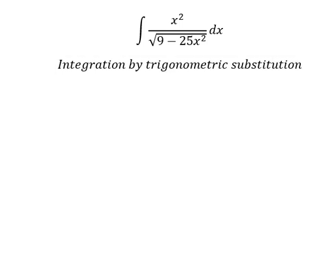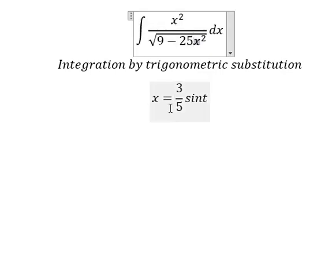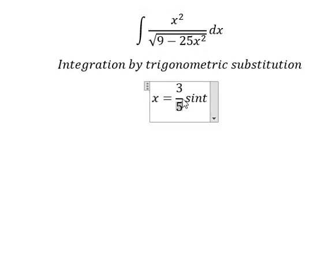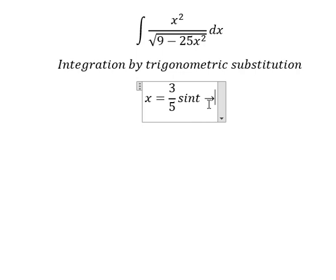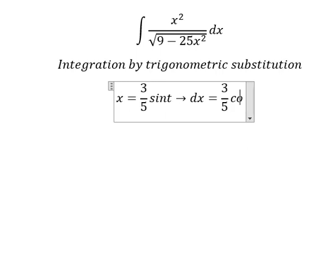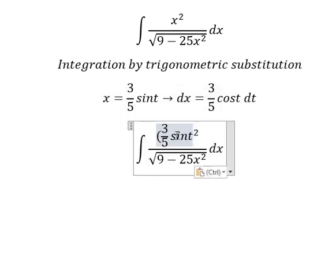I will put x equals to 3/5 · sin(t). Because if I substitute this in, we get 9/25 · sin²(t) under the expression. We have 25 cancel with 25, leaving 9. Then we can factorize: 1 minus sin²(t) becomes cos²(t). We simplify the square root, and for dx we differentiate both sides.